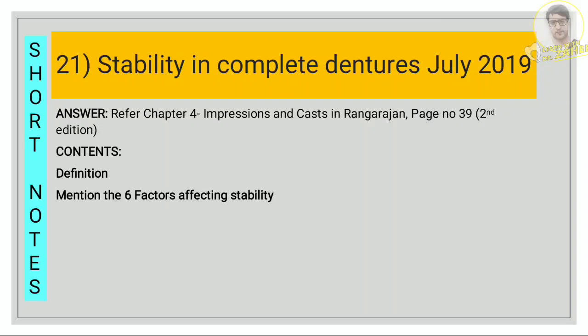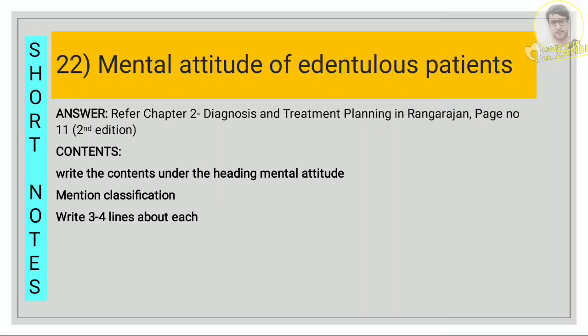For stability in complete denture, refer chapter 4, impressions and cast, page number 39. First define what is stability, then mention the six factors affecting stability — such as occlusal plane, teeth arrangement, vertical height of residual ridge — all six factors should be mentioned.